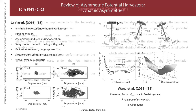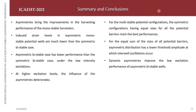In conclusion: asymmetries improve the performance of monostable harvesters, and induced strain levels in asymmetric monostables are lower than in symmetric bistable harvesters. The asymmetric bistable case has the lowest performance compared to the symmetric case, and at higher excitation levels the influence of asymmetries diminishes. For multi-stable harvesters — bistable, tristable, quad-stable — equal-sized potential wells mark the best performance; however, asymmetric distribution of potential barriers increases the probability of inter-well oscillations. Dynamic asymmetries improve low-excitation performance of asymmetric bistable harvesters.